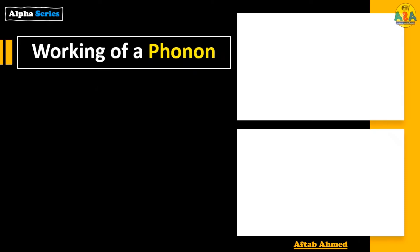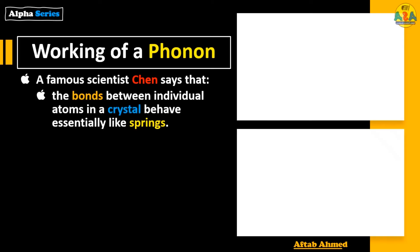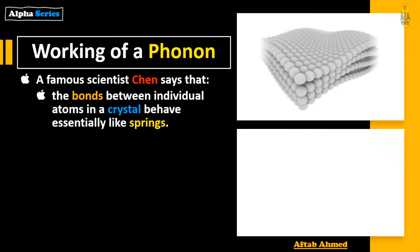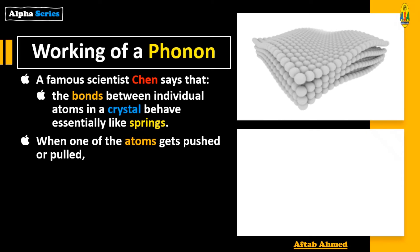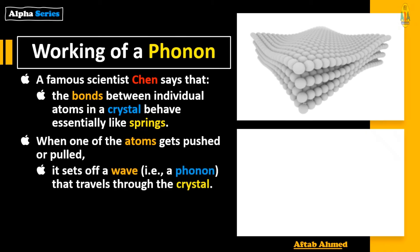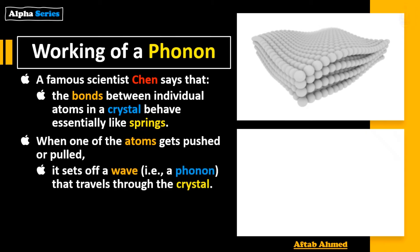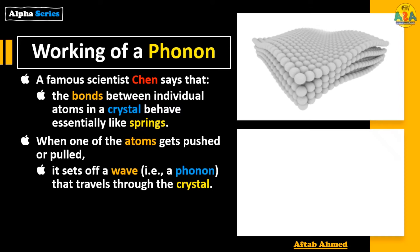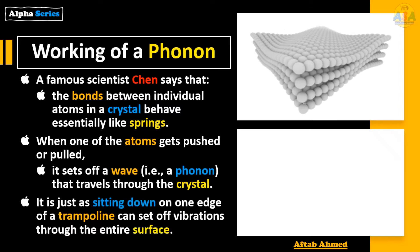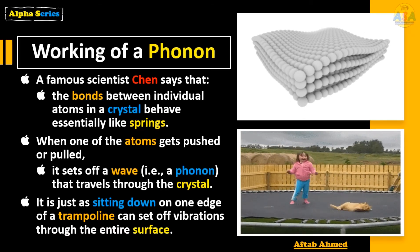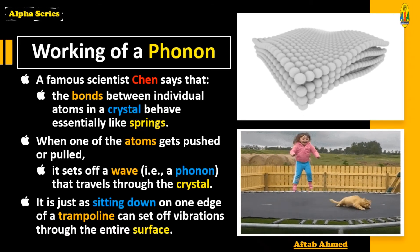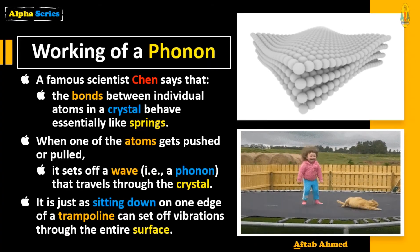Regarding the working of a phonon, scientist Chen has said that the bonds between individual atoms in a crystal behave essentially like a spring — when one of the atoms gets pushed or pulled, it sets off a wave, which is a phonon, that travels through the crystal. It is just like sitting down on one edge of a trampoline, which can set off vibrations through the entire surface.